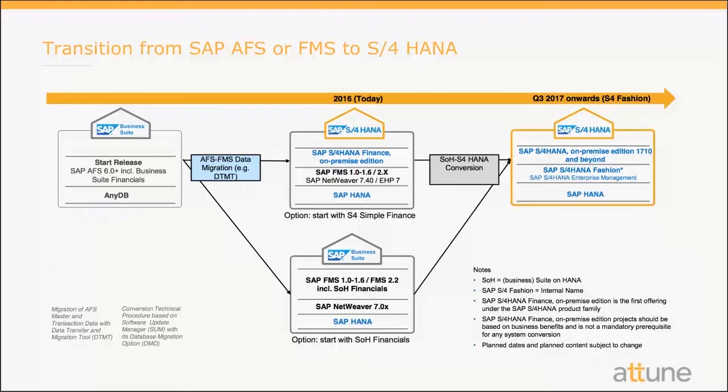Here you can see there are two boxes. One is SAP FMS with SAP S4 HANA Finance as an add-on. The other is SAP FMS with ERP Financials, so without S4 HANA Finance — both options are possible. If you're an AFS customer, you can move to an SAP FMS today, and then move to SAP S4 HANA after Q3 or Q4 of 2017, which is the first release that will be out.